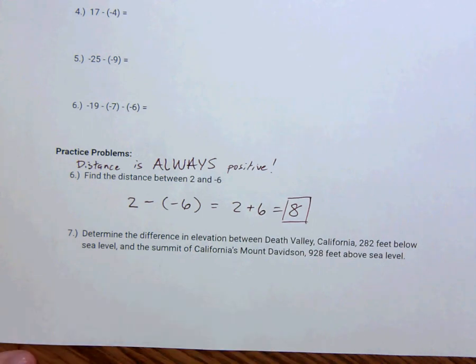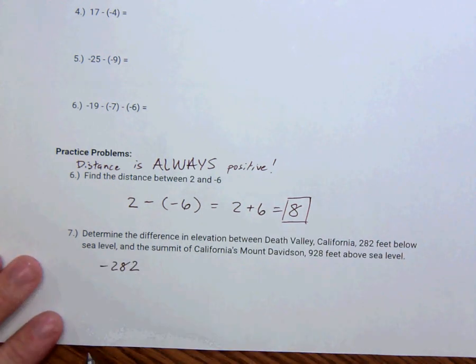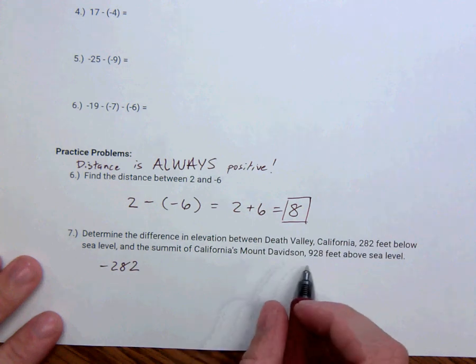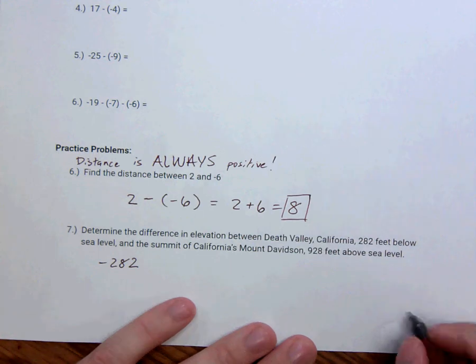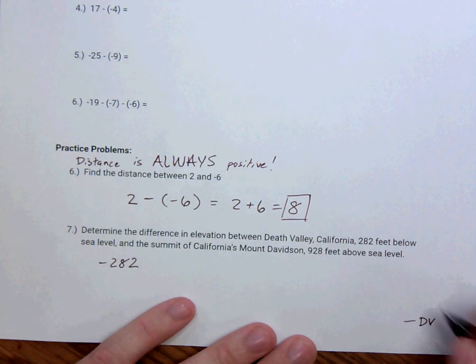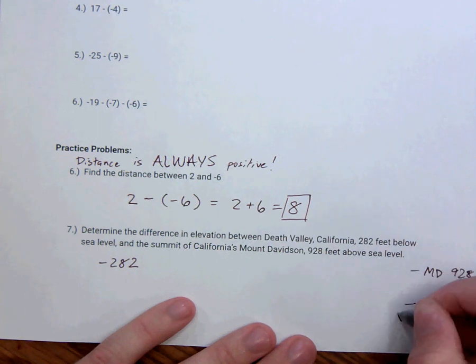Determine the difference in elevation between Death Valley, California at 282 feet below sea level and the summit of California's Mount Davidson, which is 928 feet above sea level. So really, we're looking at something like Death Valley down here at negative 282. And then here's sea level at 0. And then Mount Davidson at positive 928, all the way up here. So we're finding the distance from here to here.